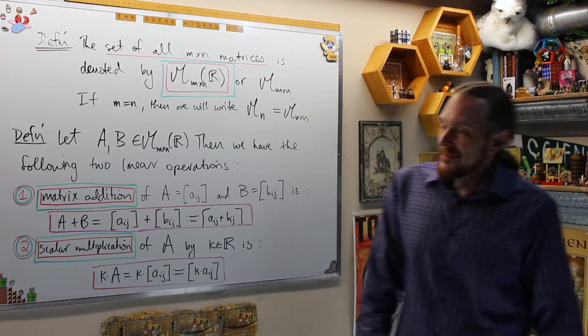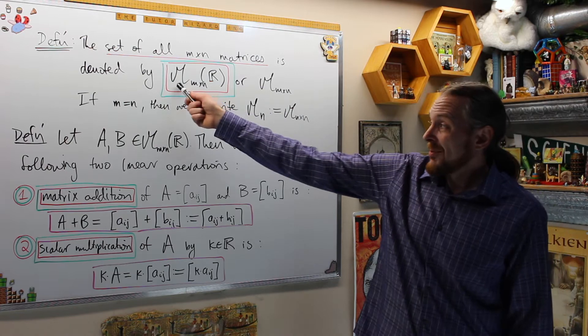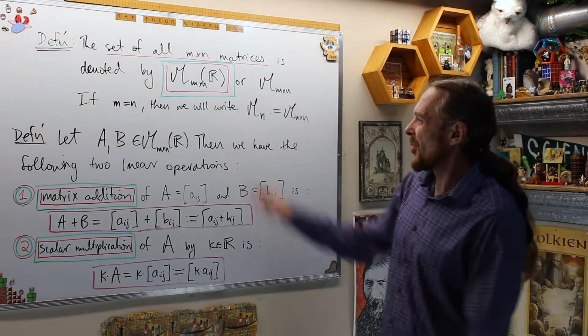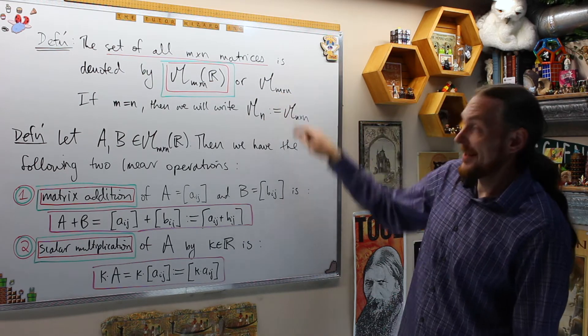The first couple definitions: the set of all m by n matrices is going to be denoted by M_{m×n}(R). Most of the time we're going to use the same ambient field R, so we'll write M_{mn}.